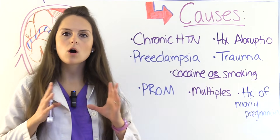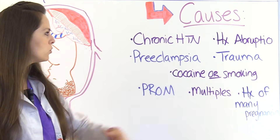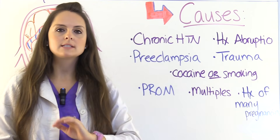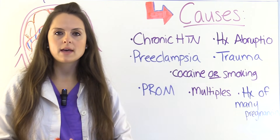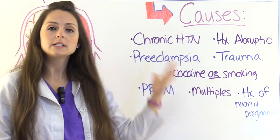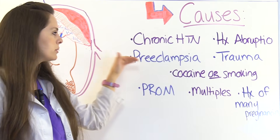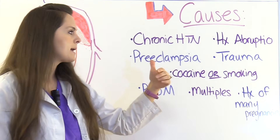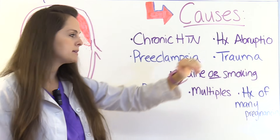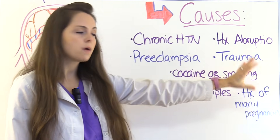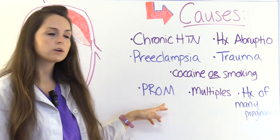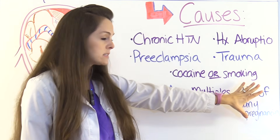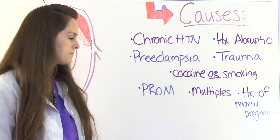What can cause abruptio placenta? Chronic hypertension throughout the pregnancy is a key factor, as this condition typically occurs in the third trimester. Risk factors also include preeclampsia, a history of previous abruptio placenta, abdominal trauma, cocaine use or smoking, premature rupture of membranes, carrying multiple babies such as twins or triplets, and a history of many pregnancies.